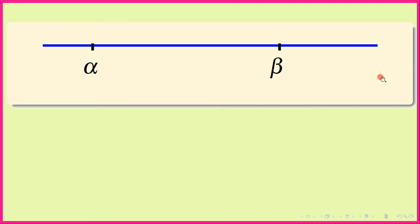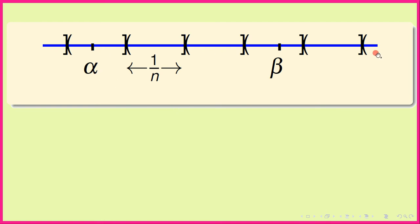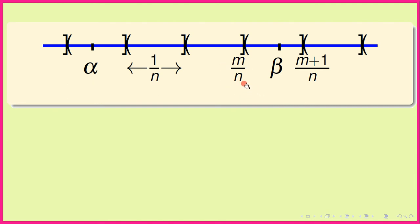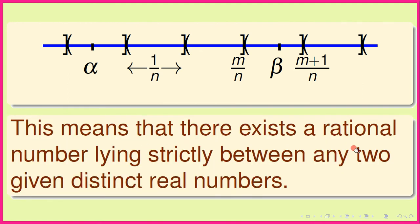In other words, m/n is a rational number strictly between alpha and beta. The situation is like this: we have the real line with two real numbers alpha and beta, alpha strictly less than beta. We subdivide the real line into small left-open right-closed intervals each of length 1/n, and beta belongs to the interval (m/n, (m+1)/n]. We see that m/n lies strictly between alpha and beta.